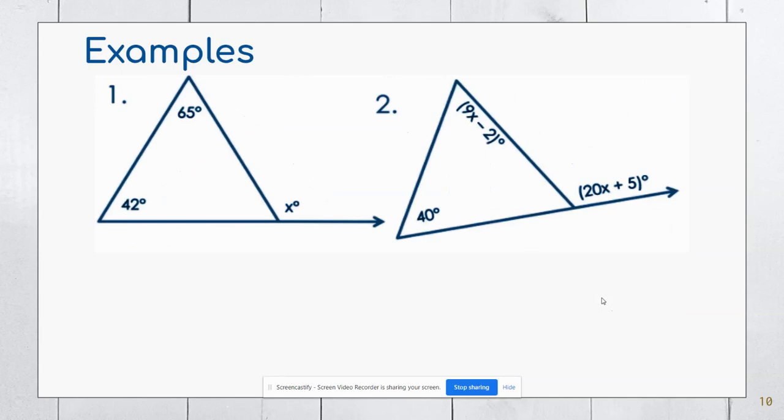Here's some examples for you. In example number one, X would be these two angles added together. So 65 and 42 gives me that X is 87 degrees.